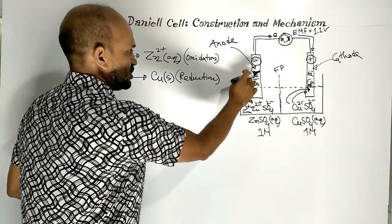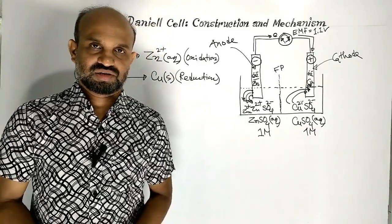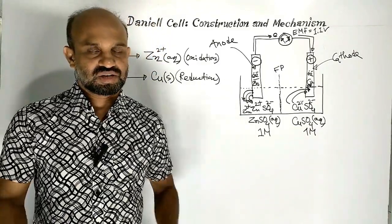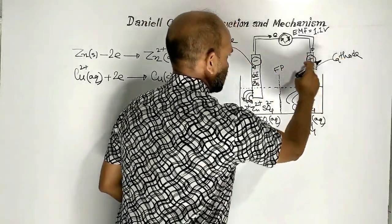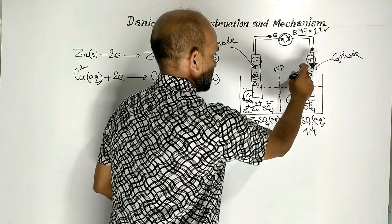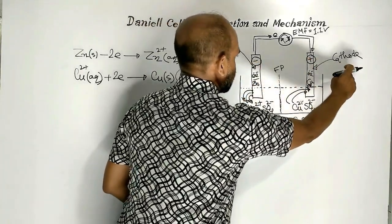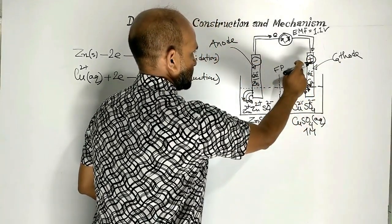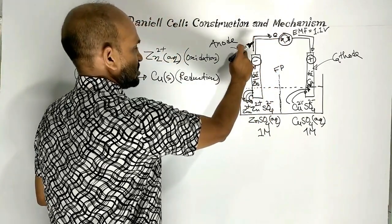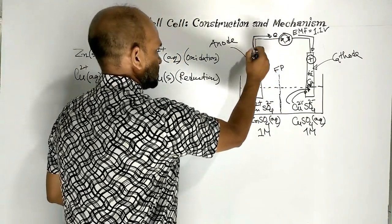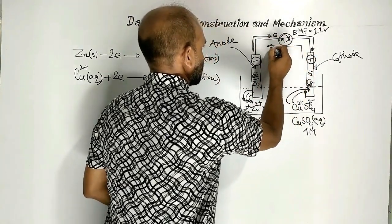This cathode is positive in charge. This differs from the electrolytic cell: in an electrolytic cell, the anode is positive in charge and the cathode is negative in charge, but in an electrochemical cell the anode is negative in charge and the cathode is positive in charge. We saw here flow of electrons, which is electric current.